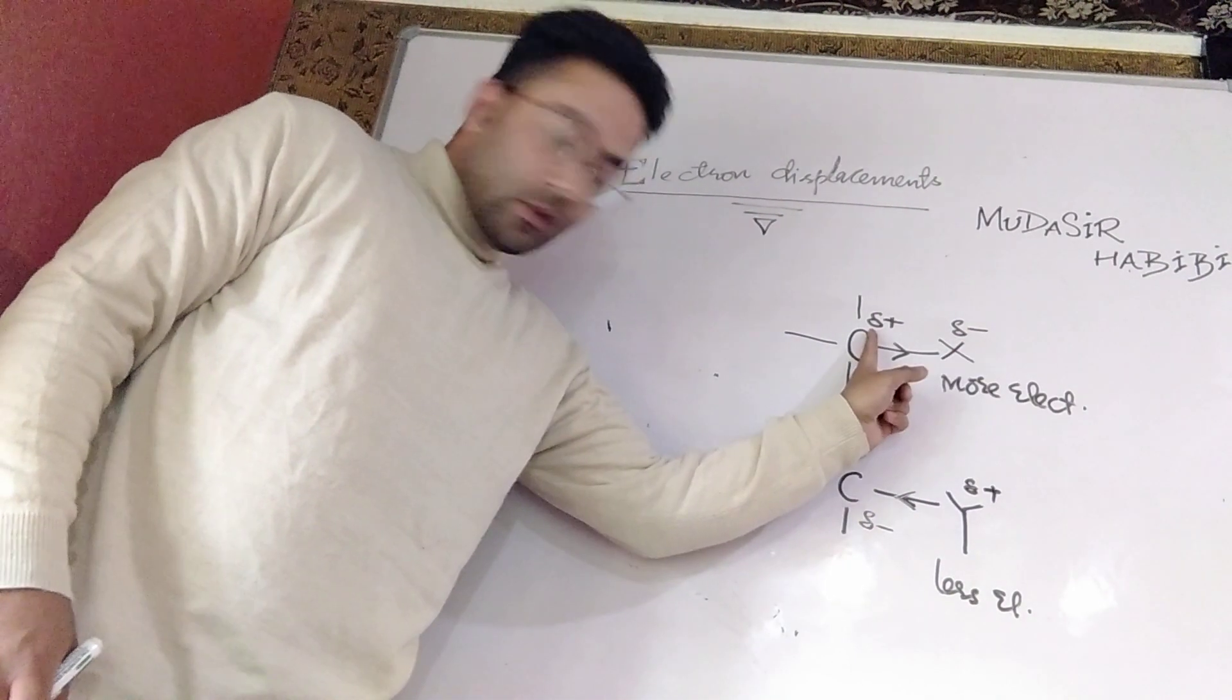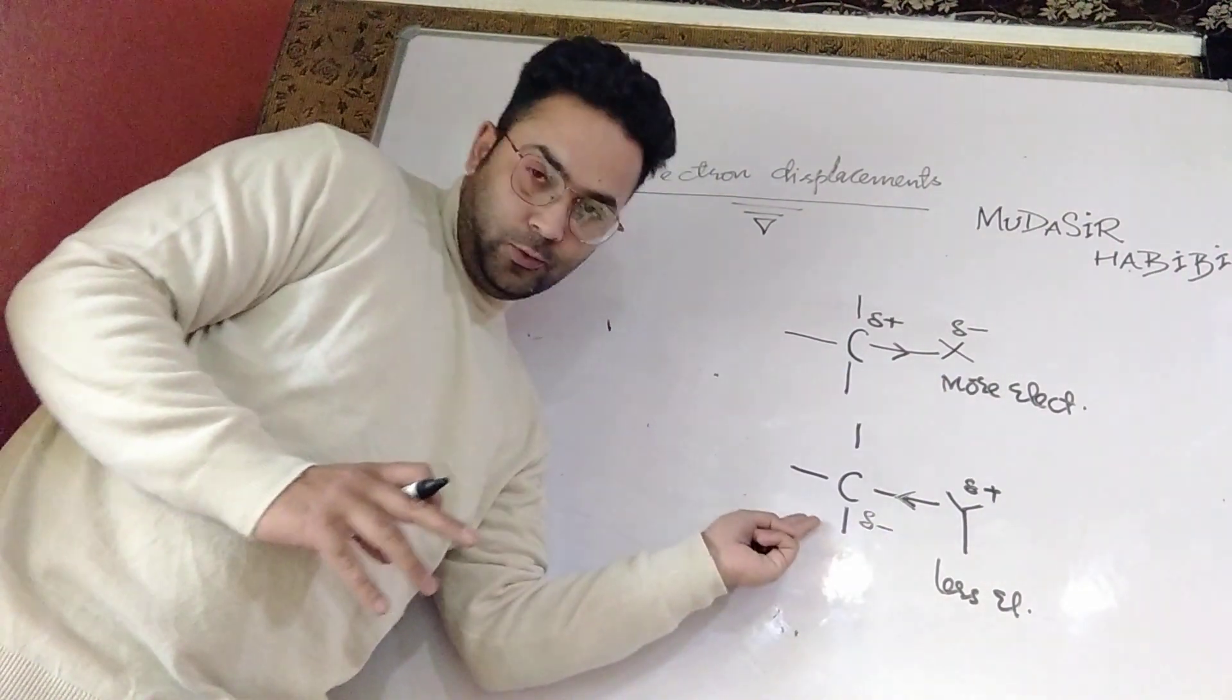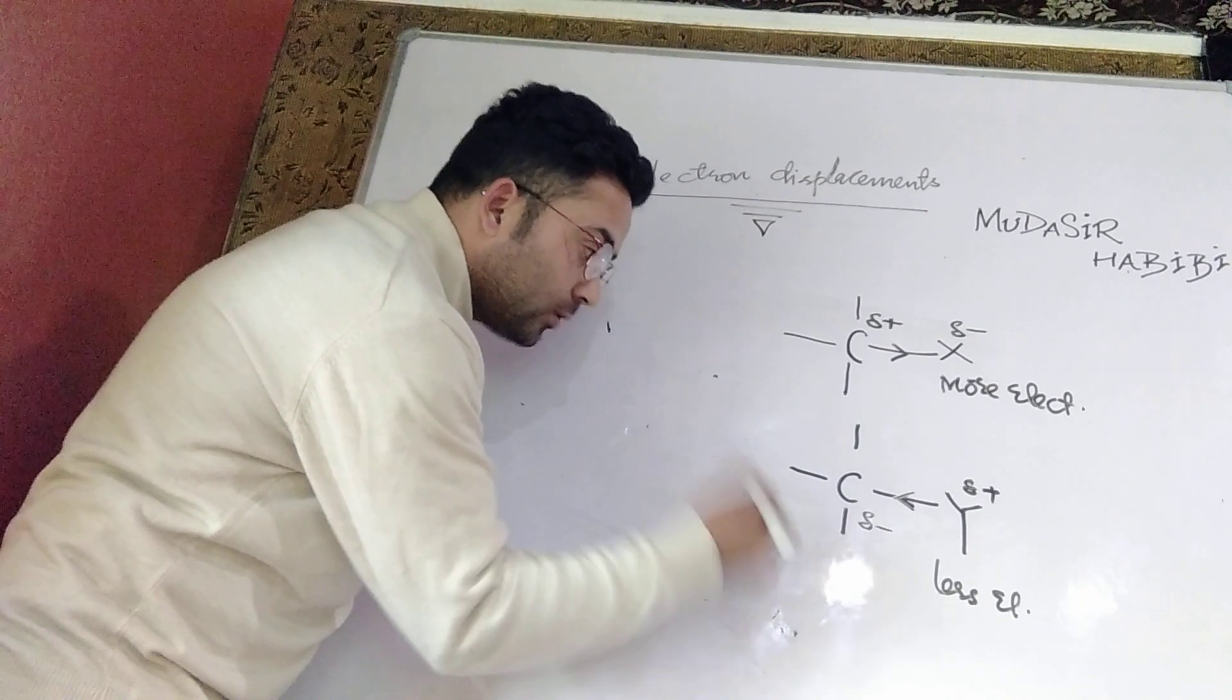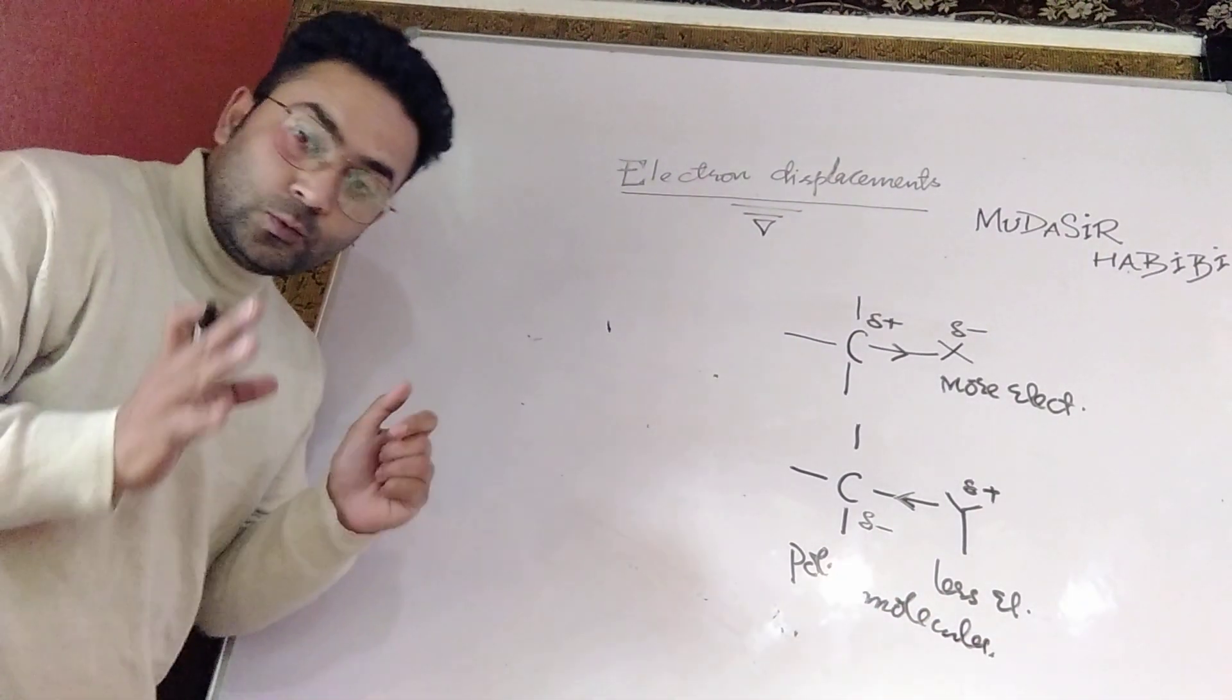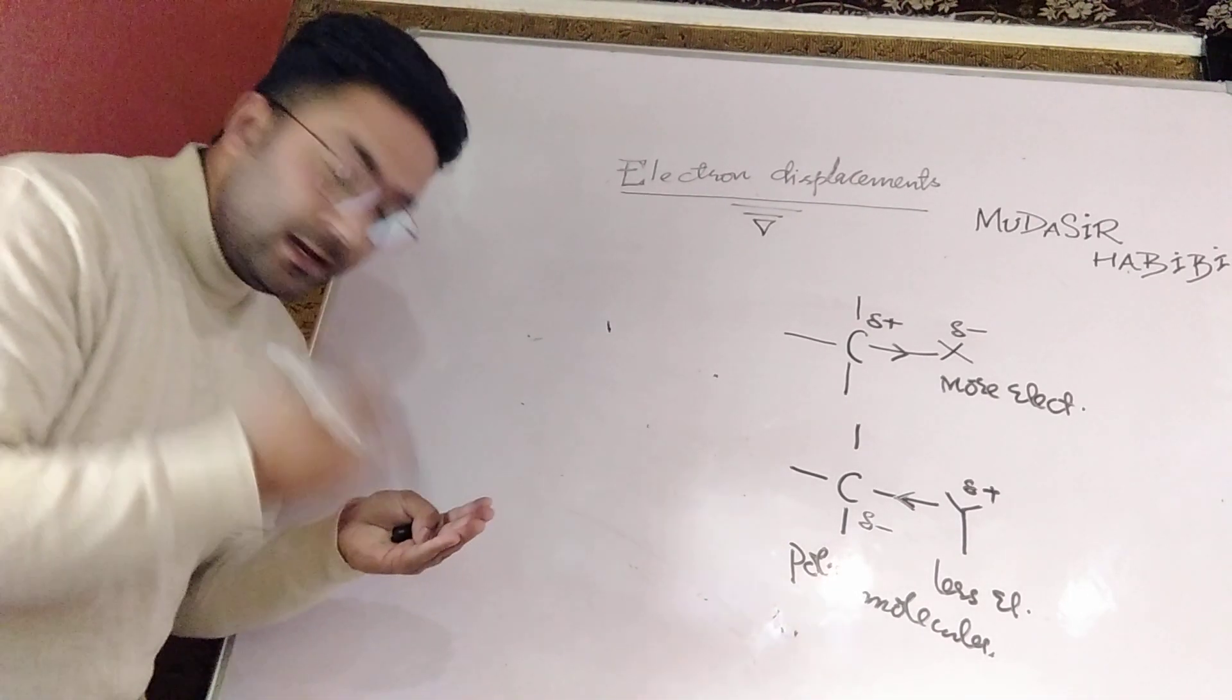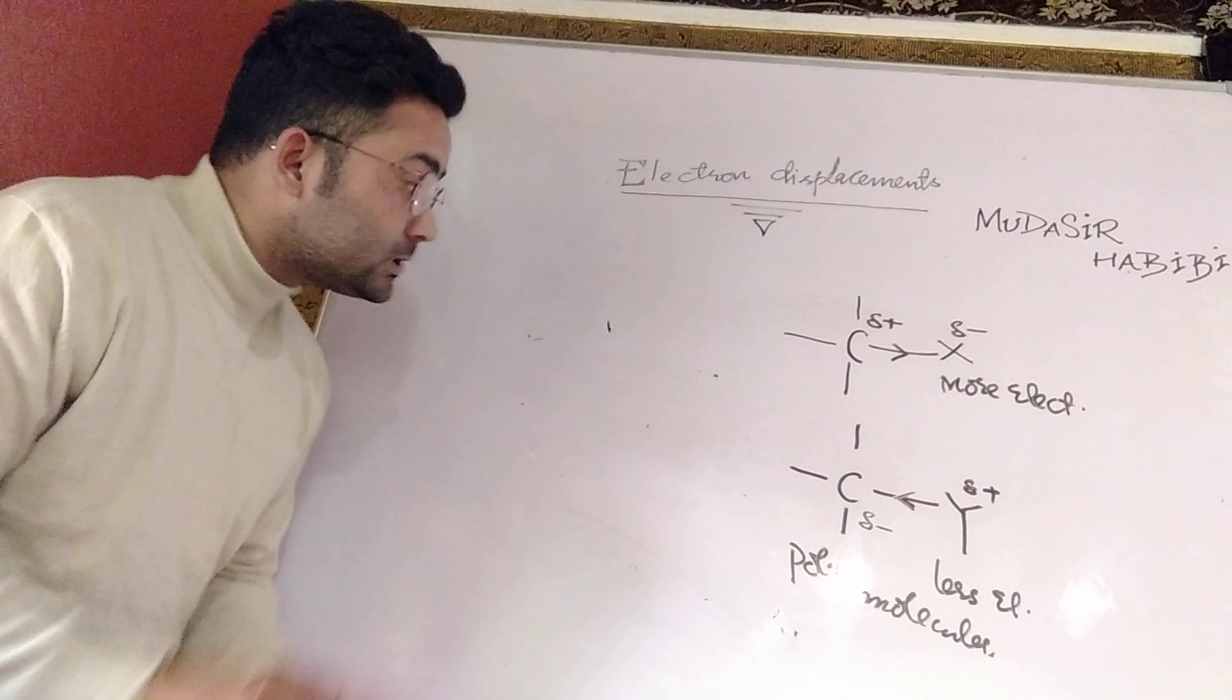In both cases, positive will develop because movement of electron is happening, either towards X or away from Y. In both cases, the moment of electron that occurs and the charges that develop, we call such bonds polar bonds. That means whenever shift of electron occurs, polarity is induced in the molecule, and that polarity will be responsible for development of dipole moment. That explains many properties like solubility, density, acidic strength, or basic character of different organic compounds, based on the polarity developed due to electron displacements.